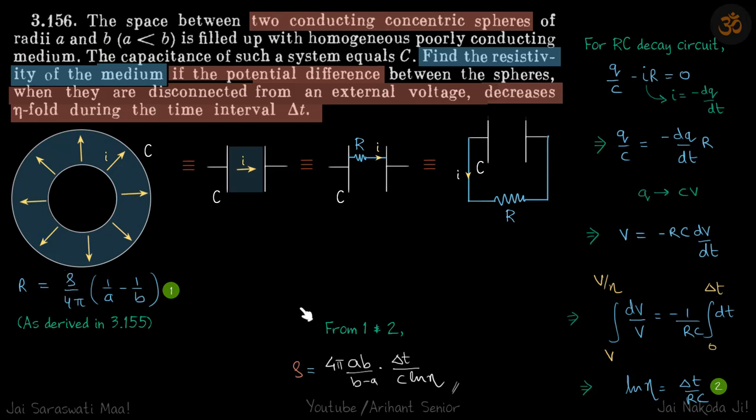So we need to find rho. We already got a term of R here, so let's eliminate R from equations 1 and 2 and rest everything is given in the problem. So we get our answer, resistivity is this.